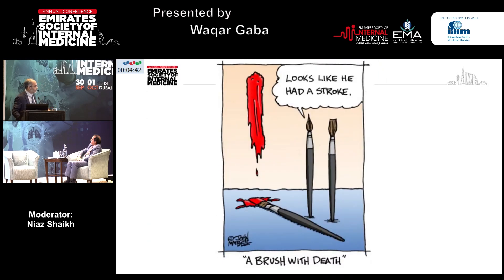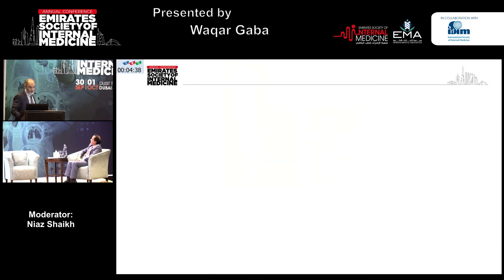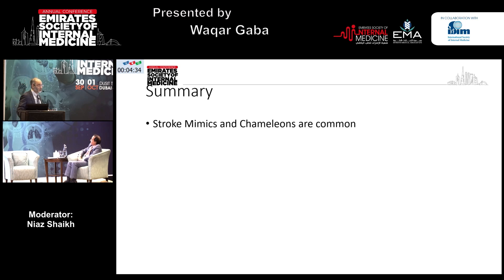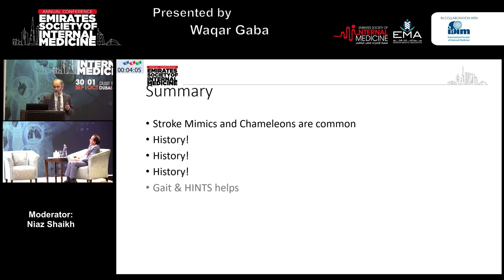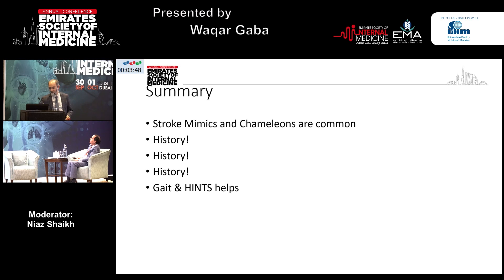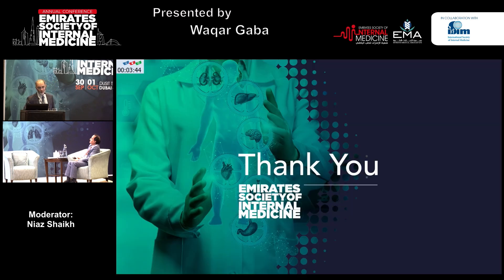In summary, stroke mimics and chameleons are common. If you really want to diagnose either, the clue is history, history, and history. Some would argue MRI is the answer — yes, MRI helps, but you really need to know your clinical diagnosis first. I cannot emphasize enough: gait and HINTS, and it comes with practice. The more you do HINTS in the ER, the better you get. MRI helps, of course, but not always. Thank you.